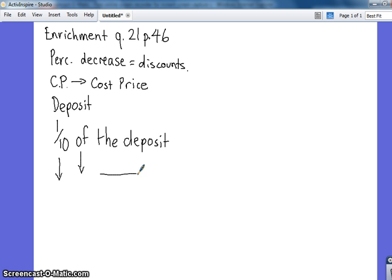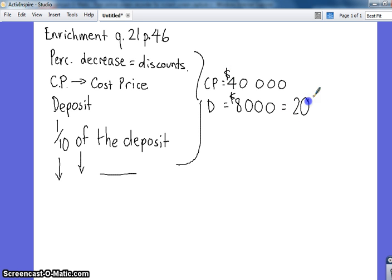So, and then they give us an example of all this, which is a beautiful thing that they do for us. For example, the cost price is $40,000 for this vehicle. The deposit is $8,000, which represents a 20% deposit of your cost price. Yeah. That makes sense. The remaining $32,000 will be discounted by 2%. So the remainder will be $32,000. That's pretty obvious. That's the $40,000 less the $8,000.